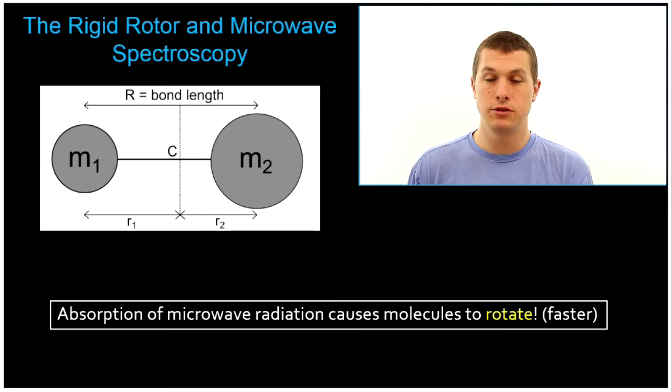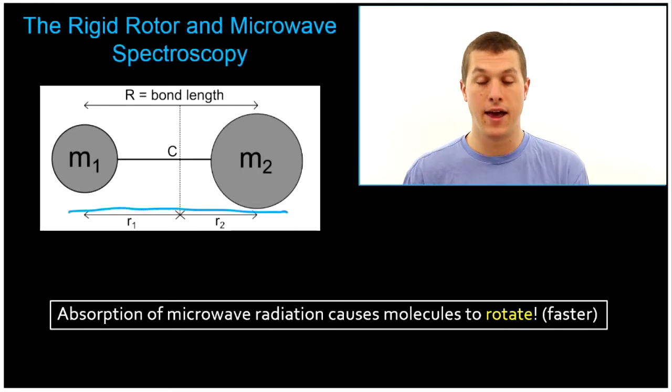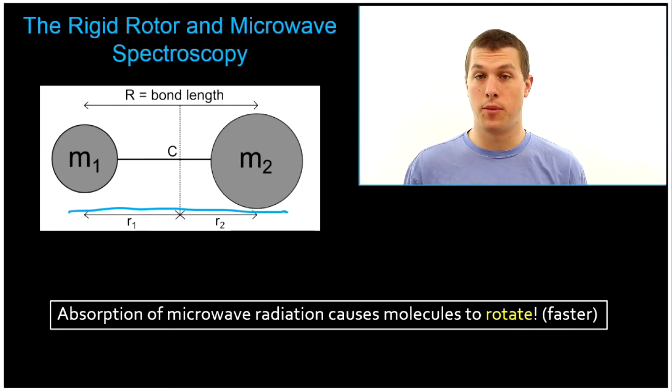So what's the rigid rotor? Well, the rigid rotor is a quantum mechanical model system, kind of like the harmonic oscillator or the particle in the box, that helps us think about this system. And so the rigid rotor just says, let's treat our molecule like two masses connected to each other, and they're fixed in terms of the distance apart they are. So it's different than the harmonic oscillator, which allows it to vibrate. The rigid rotor is rigid, and it can rotate.